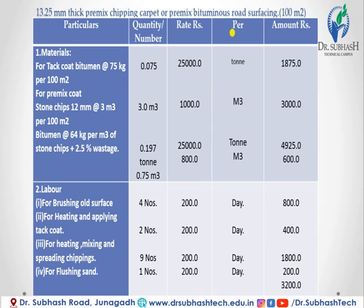So for the tack coat bitumen for bituminous road surfacing, 25,000 multiplied by 0.075 — the total amount for tack coat bitumen at 75 kg per 100 meter square is 1,875 rupees.